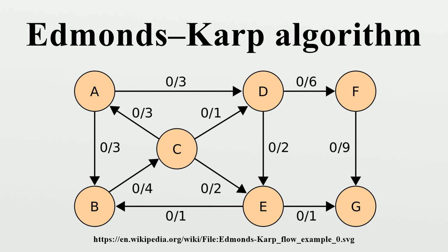Pseudocode using adjacency nodes: Input graph, S, T. Output flow. Flow equals 0. Repeat: Q equals queue, pred equals array. While queue not empty, Q equals Q.poll. If pred[T] not null, break. Compute DF equals infinity, update DF equals min. For each edge, flow equals edge flow plus DF; edge.rev.flow equals edge.rev.flow minus DF. Flow equals flow plus DF. Return flow.